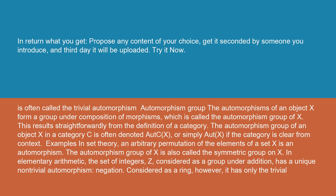In elementary arithmetic, the set of integers Z, considered as a group under addition, has a unique non-trivial automorphism: negation. Considered as a ring, however, it has only the trivial automorphism.